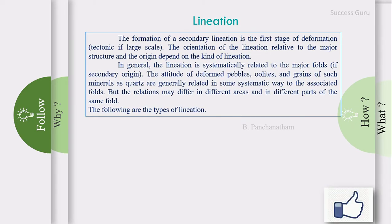The formation of secondary lineation is the first stage of deformation, which is tectonic if large scale. The presence of lineation in a rock shows the rock has been deformed. The orientation of the lineation related to major structures and its origin depends on the kind of lineation. In general, lineation is systematically related to major folds if of secondary origin. Deformed pebbles, oolites, and grains of minerals like quartz are generally related in some systematic way to the associated fold, but the relation may differ in different areas and in different parts of the same fold.